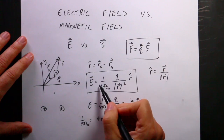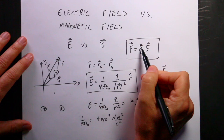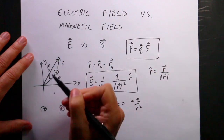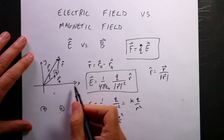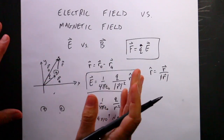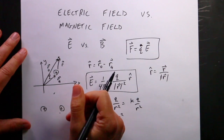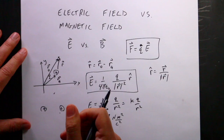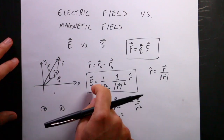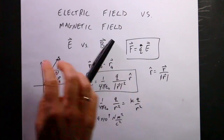A charge creates an electric field, and if I put another charge in that field, it experiences a force: F = qE. What I want to do now is switch over to Python, put a charge, and then pick some locations around it to display the electric field. It's harder to visualize for the magnetic field, so I'll do it for the electric field first.